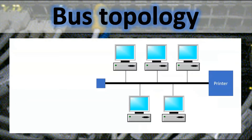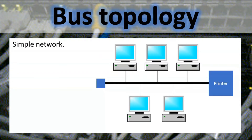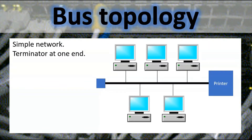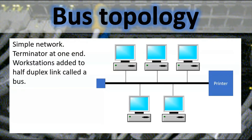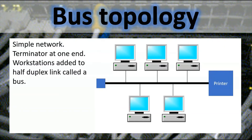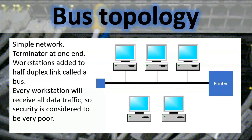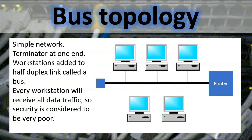Bus topology is a simple network characterized by a terminator at one end. Workstations are added to a half-duplex link called a bus. Because every workstation will receive all data traffic, security is considered to be very poor.